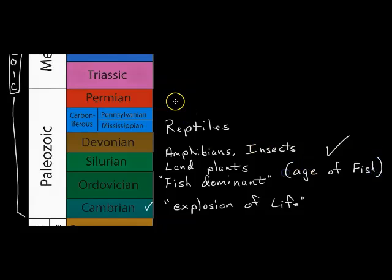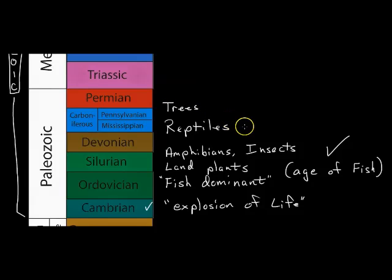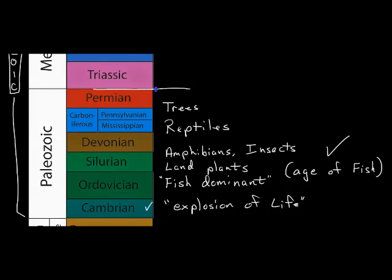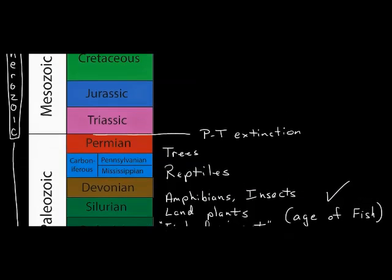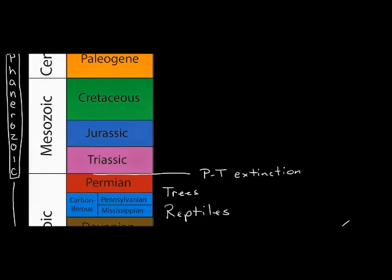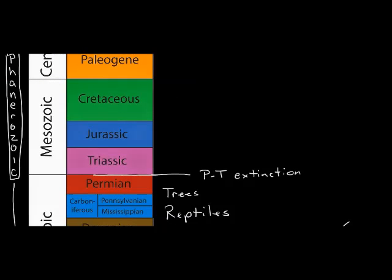Later on during the Paleozoic we also see the development of our first forests and trees, and all the different types of animals continued to develop. At the end of the Paleozoic, right in between the Permian and Triassic periods, we get what's known as the P-T extinction. I speak a little bit about that in a previous video that covers the five extinctions.